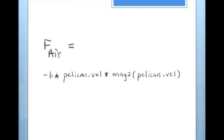The next step is to calculate air resistance. Remember, the problem gave us a formula for the air resistance being the velocity cubed. We also have to factor in the proportionality constant b that was given to us in the problem. Here's how this expression can be written. We also have to keep this in vector form, which is why mag2 of pelican dot vel is written outside pelican dot vel.